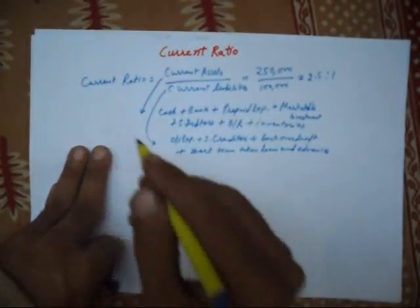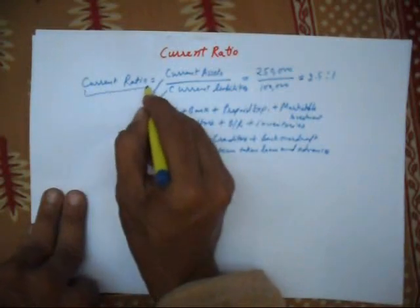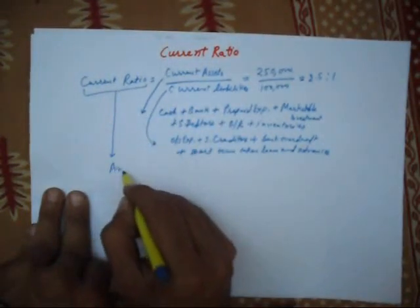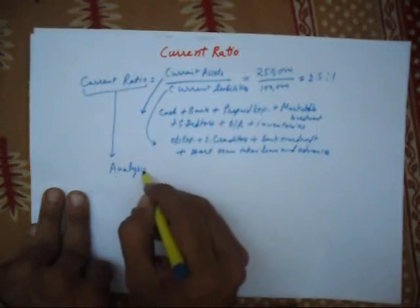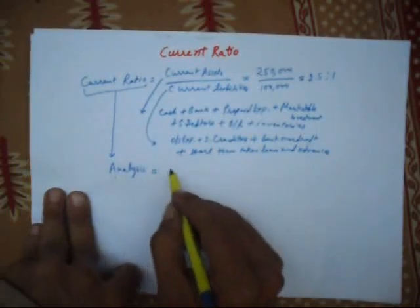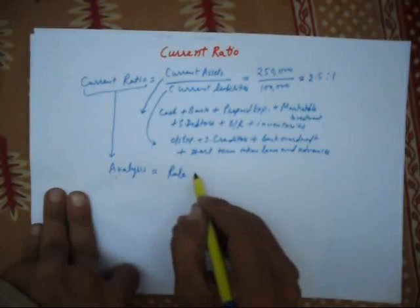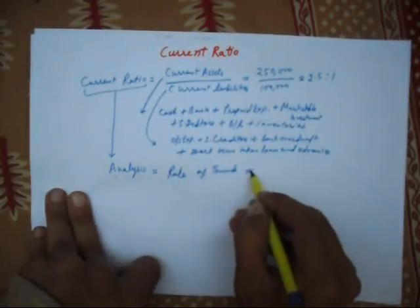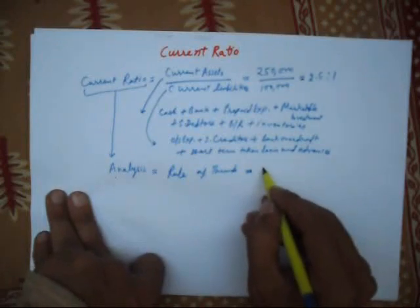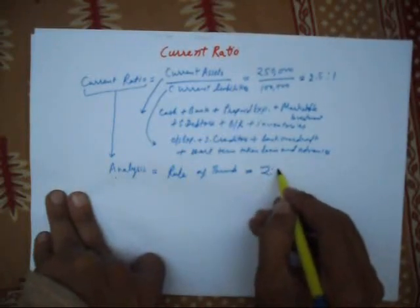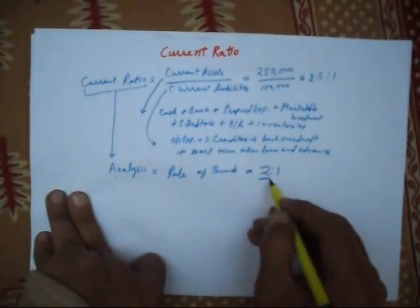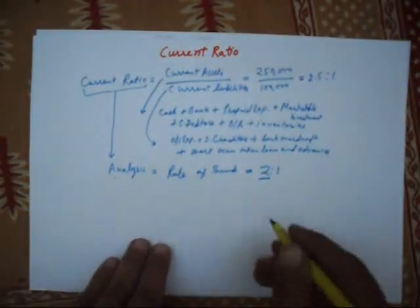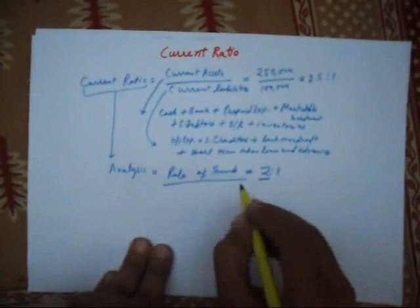Now, we will analyze current ratio. As a rule of thumb, our current ratio should be two to one. It is the rule of thumb.